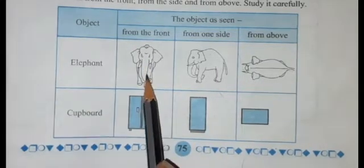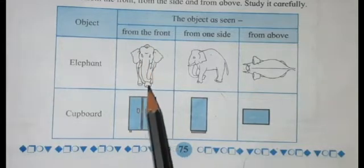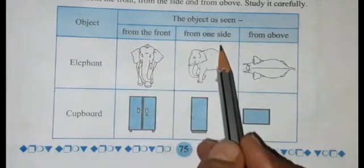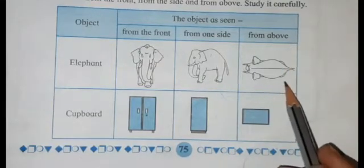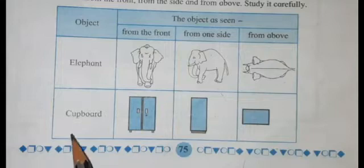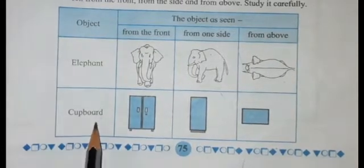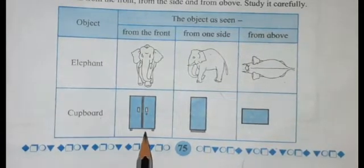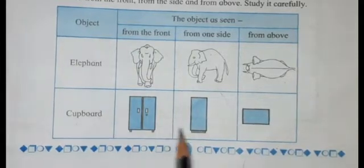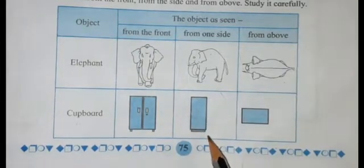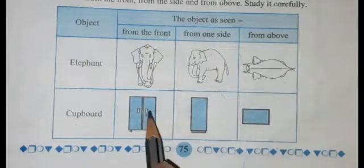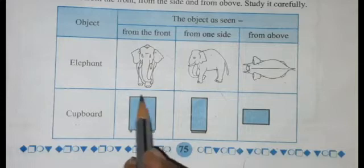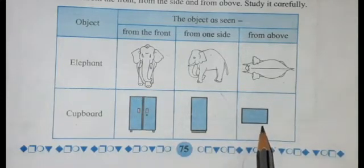The picture of the elephant is given and shows how it looks in different views — from the front it looks like this, from one side like this, and from above like this. For the cupboard, from the front it looks like this, from one side like this, and from above we see only the top part, which looks like a rectangle shape.